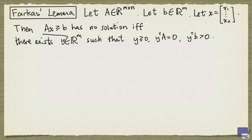The system Ax greater than or equal to B has no solution, if and only if, there exists an m-tuple Y such that these conditions hold. First we'll see that if you can find a Y satisfying these conditions, then Ax greater than or equal to B has no solution.